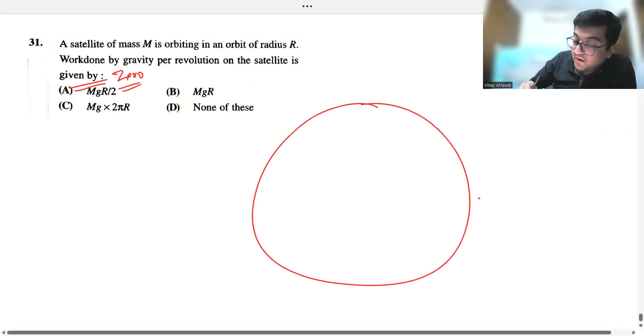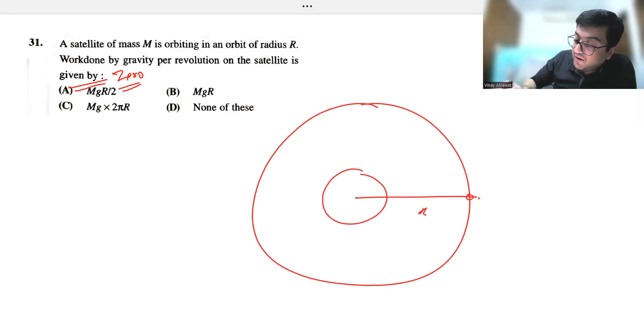It's going in a circular orbit. It's always going to be the velocity. It's going to be the force. The force here and the velocity will be there.